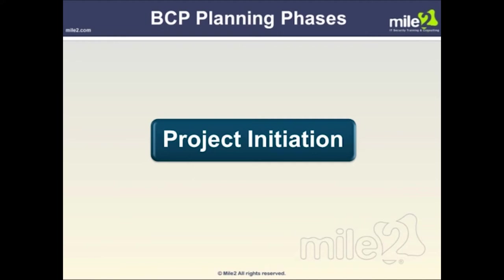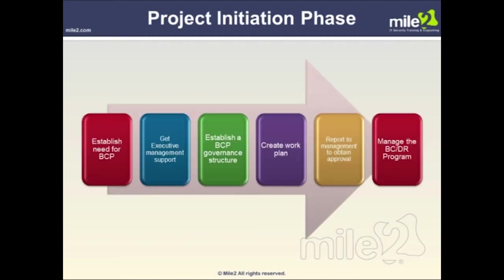During the project initiation phase, project requirements and structure are being discerned. The focus is to understand the background underlining the need for such a project, the project scope, objectives, goals, and teams required to address the different interrelated activities of business continuity planning development, implementation, and maintenance. The outcomes of this phase are to: 1. Establish the need for business continuity planning. 2. Get executive management support. 3. Establish a BCP governance structure. 4. Create a work plan. 5. Report to management to obtain approval. 6. Establish management capabilities to sustain the business continuity and disaster recovery program.